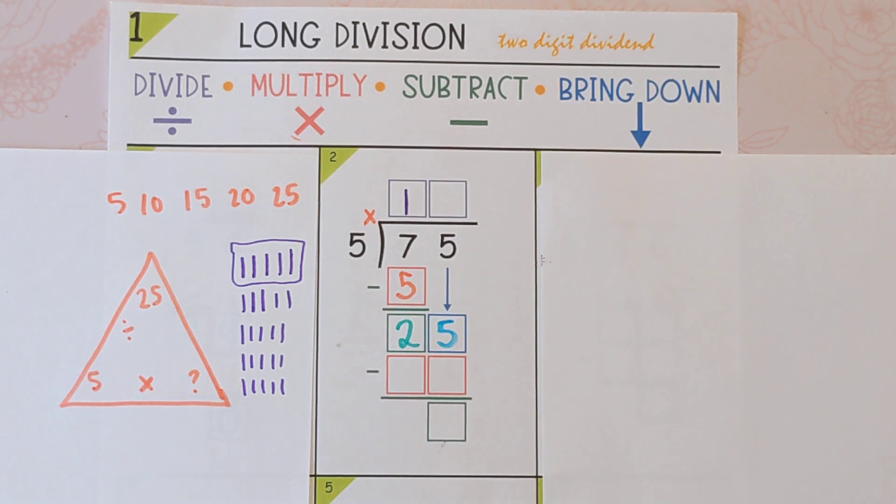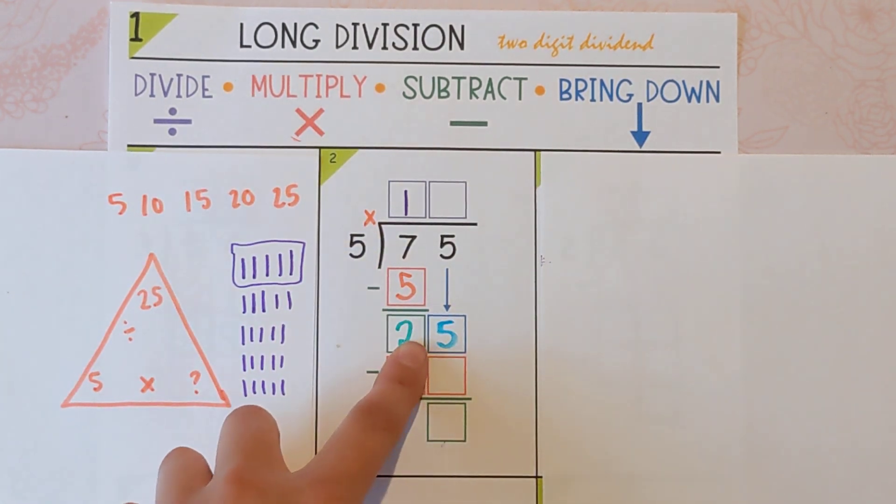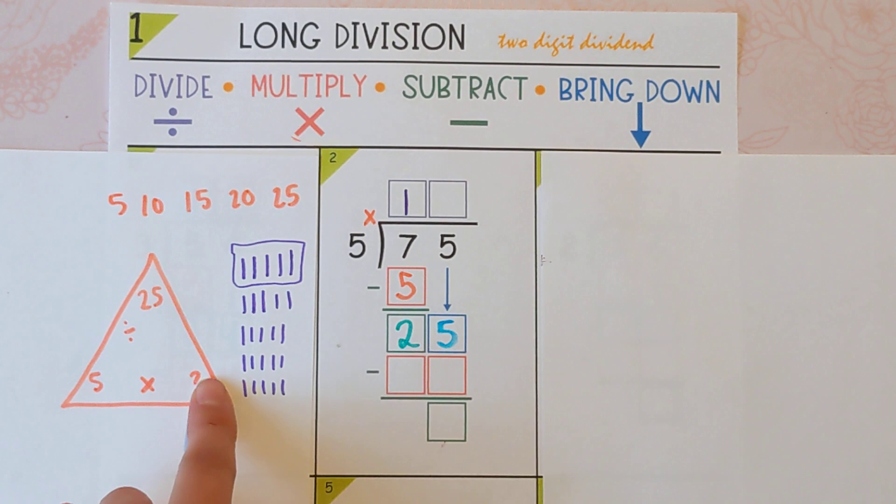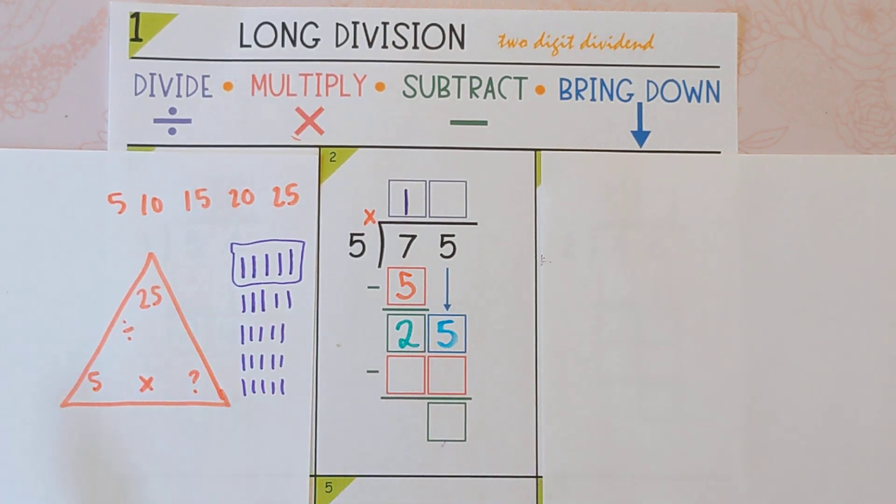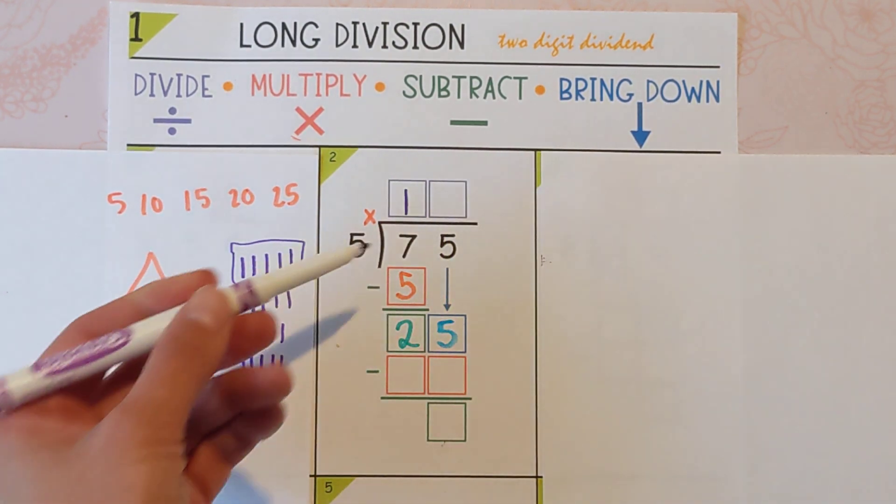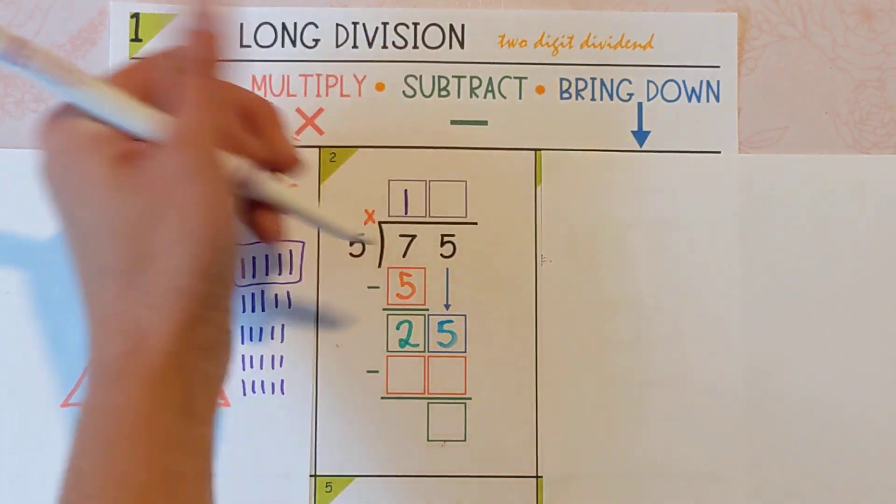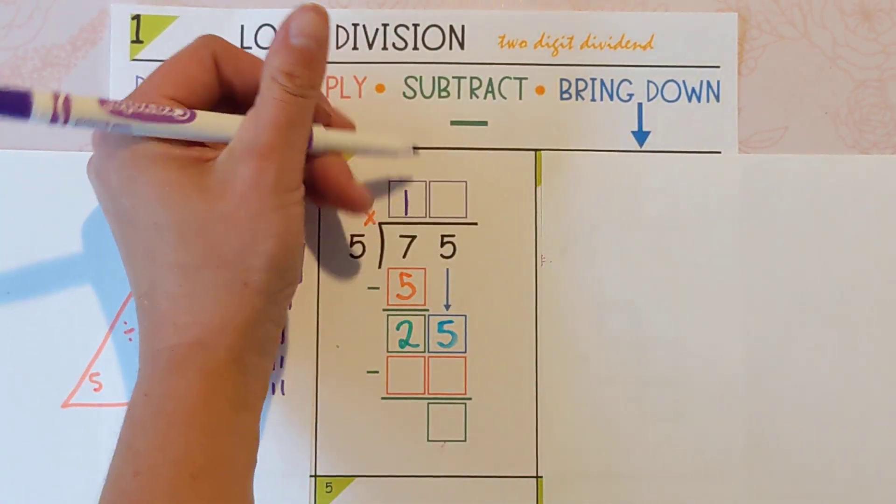So in this case, 5 goes into 25 equally. 25 divided by 5 is 5, and we're putting it up here because when you're dividing, that's what we're doing here. And this is the answer. So every time you divide, put it in the purple box up top.